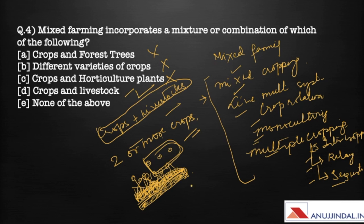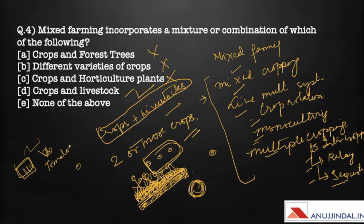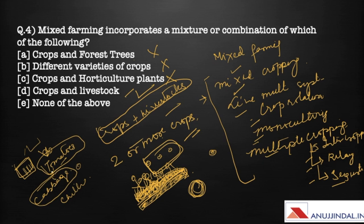Monoculturing is the cultivation or production of a single crop in the same area for a year. Crop rotation is when you rotate crops — for example, growing tomatoes in the first season, cabbage in the second season, and chili in the third season, all in the same piece of land. Multiple cropping means growing more than one crop in the same land in one year.